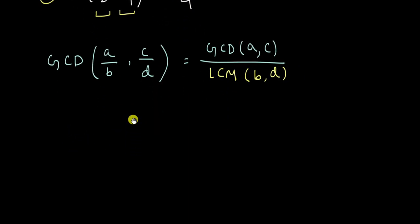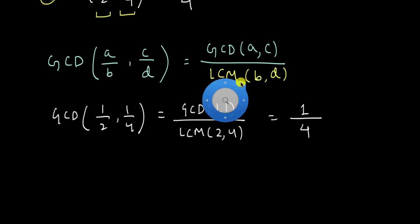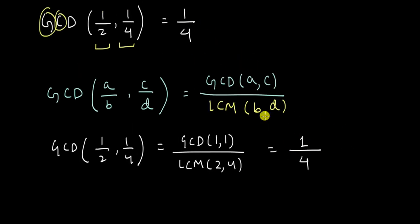Let's try using this formula. So we want to find the GCD of 1 by 2 and 1 by 4. According to this formula, this should be equal to the GCD of 1 comma 1 divided by the LCM of 2 and 4. So GCD of 1 comma 1 is 1. And what is the least common multiple of 2 and 4? So 4 into 1 is 4 and 2 into 2 is 4. So 4 is the least common multiple. Yes, fair. This works.